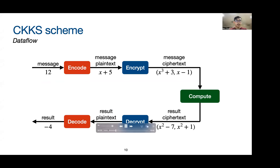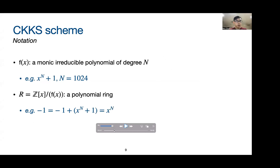When encrypted, it becomes a pair of polynomials. It's a monic irreducible polynomial of degree n, typically chosen to be x to the power of n plus 1, where n is a power of 2. R is a polynomial ring, which can be roughly thought of as a set of polynomials with degree at most n minus 1 and with integer coefficients.